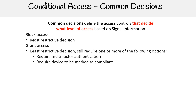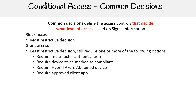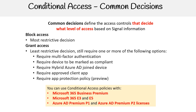The grant access options include: require MFA, require device to be marked as compliant, require hybrid Azure AD join device, require approved client app, and require app protection policy. Another important thing to know is that you can use conditional access policies with Microsoft 365 Business Premium, Microsoft 365 E3 and E5, and Azure AD Premium P1 and Azure AD Premium P2 licenses. That's the value of conditional access and how you can use conditional access policies to increase your level of security.